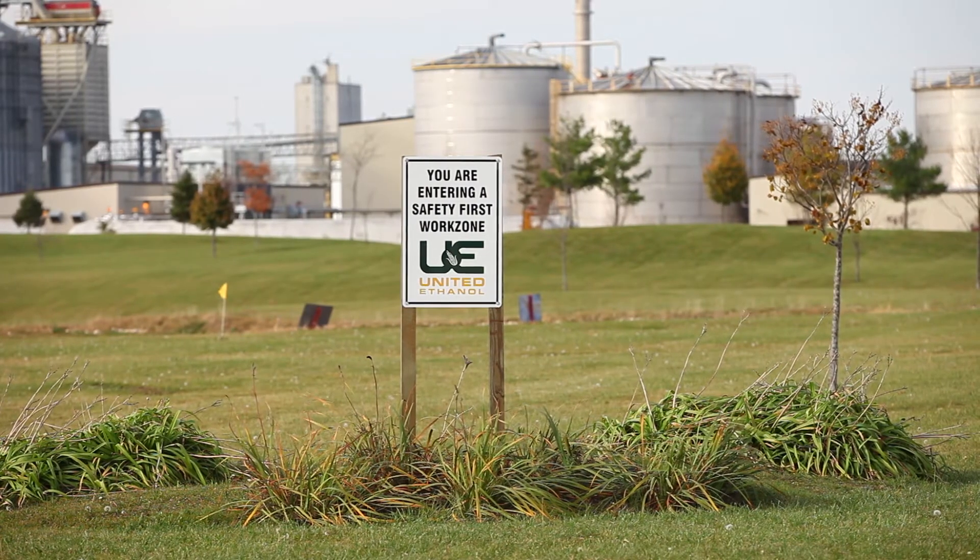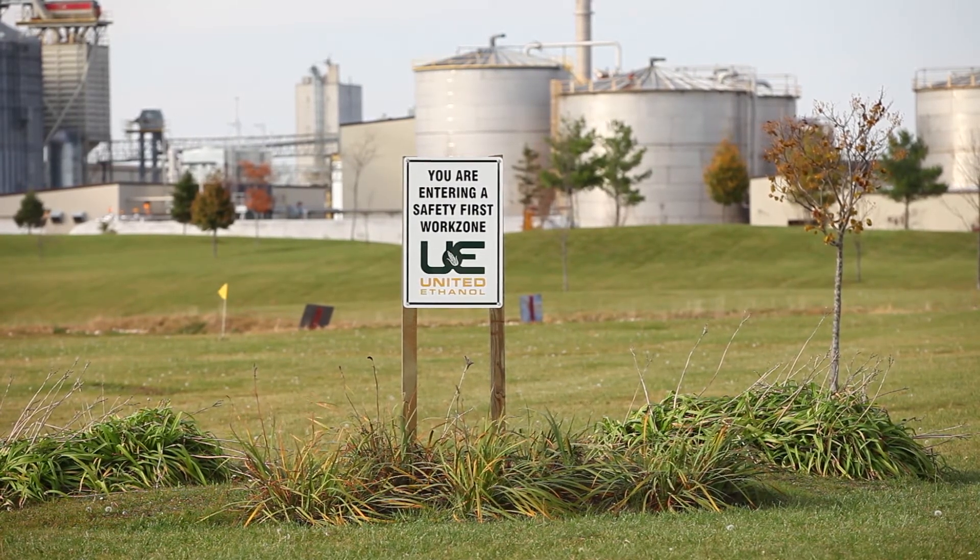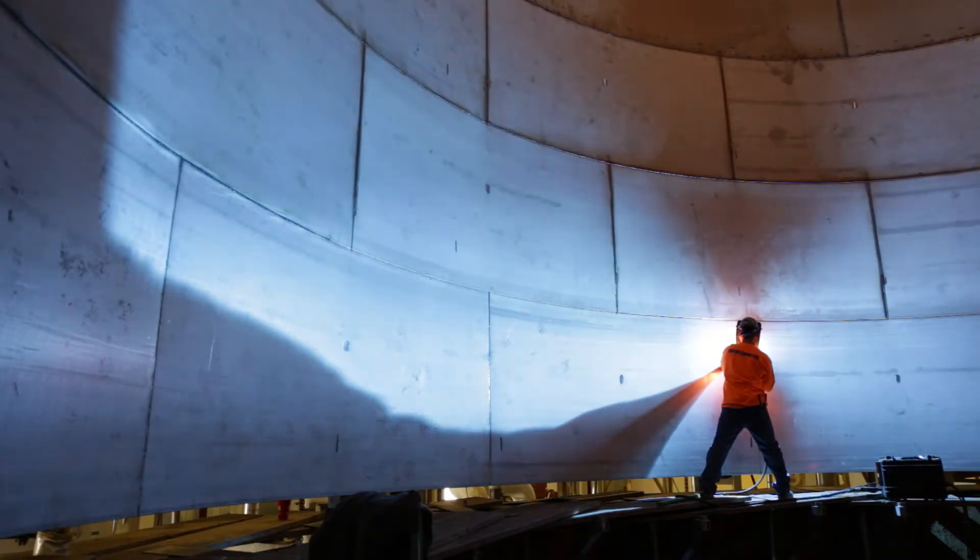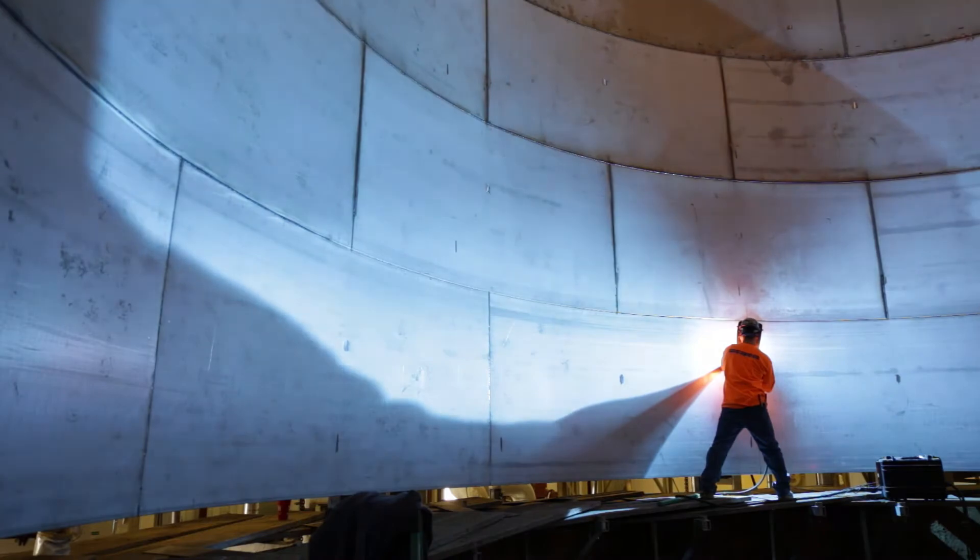Safety is paramount to United Ethanol. We are an ethanol producing facility, so we fall under a little more stringent OSHA guidelines with the process safety management procedures. Mueller has adapted to that very well.